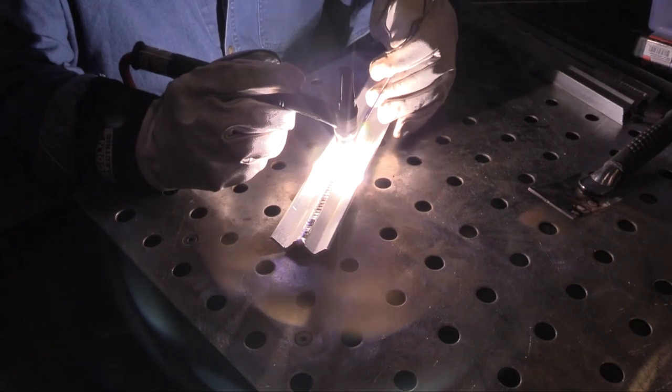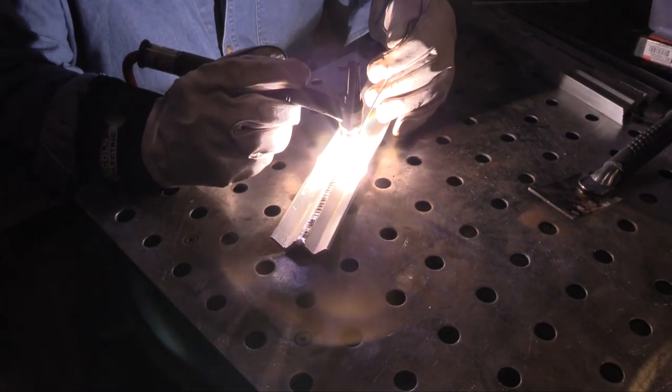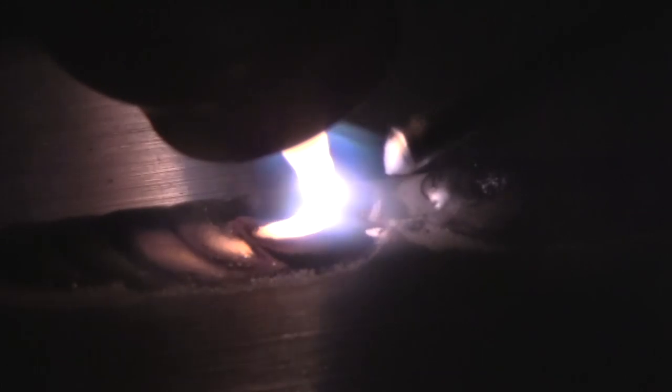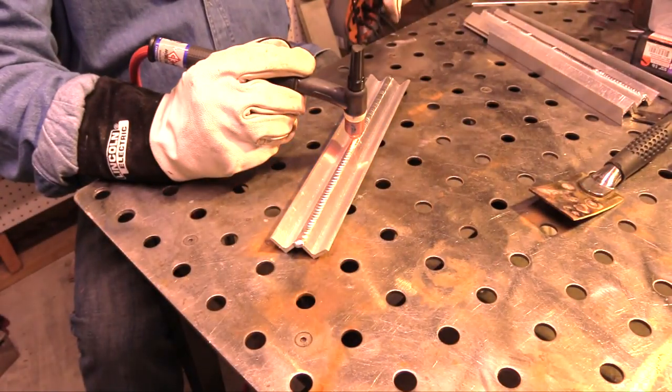So with the number six gas lens, it helps me extend that with still getting good gas coverage and helps me film. If I don't need to film, I don't need to extend it out quite that far, and I usually don't.